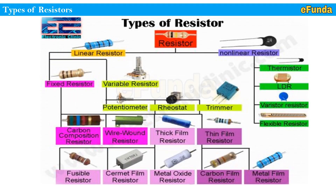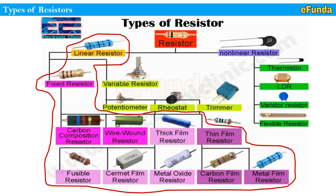Moving on to types of resistors, one can refer to the picture where the types of resistors are defined — thanks to Electronic Clinic where they have compiled all resistor types together. Resistors are further divided into linear resistors and nonlinear resistors. A linear resistor is one of the most commonly used resistors. The resistance of a linear resistor remains constant no matter if the potential difference or voltage applied is increased or decreased. A linear resistor has a fixed resistance which does not change, and the most commonly used type in electronic circuits is the fixed type.